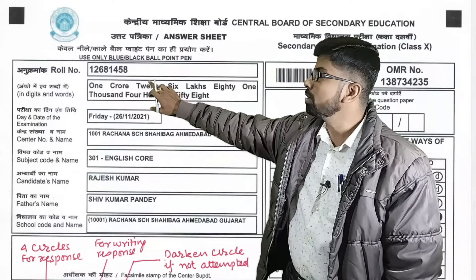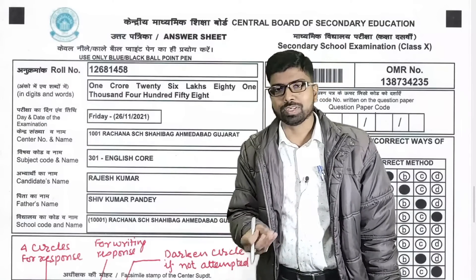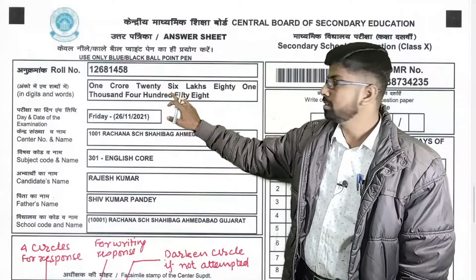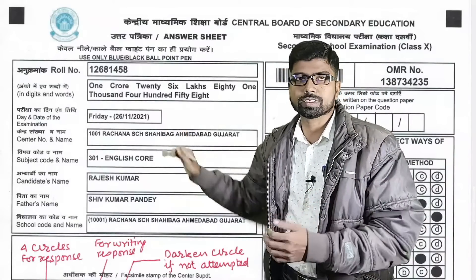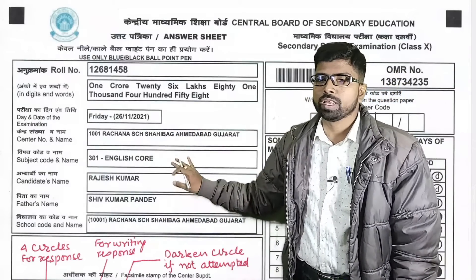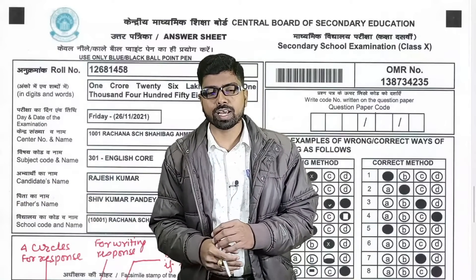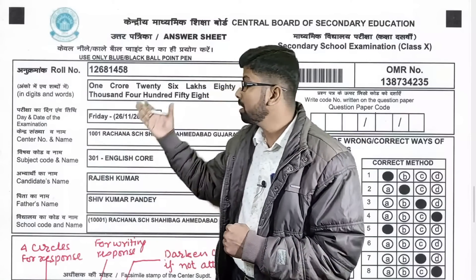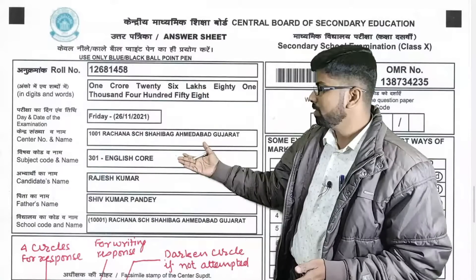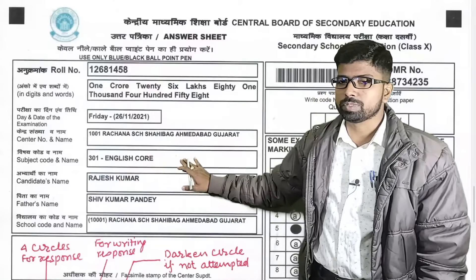The roll number will be automatically pre-printed on the OMR sheet for every student who has applied for the CBSE examination. The date of the examination, subject, and subject code will also be pre-printed. During pre-board exams, some students asked whether extra time would be given to fill in their data — CBSE has clarified that all student data will be pre-printed. Center name, center code, and subject are also pre-printed.